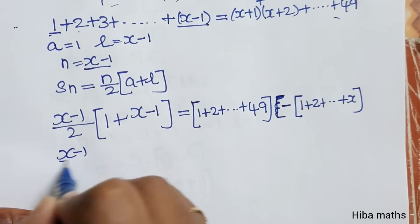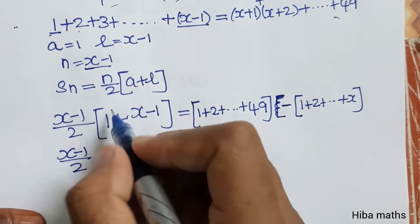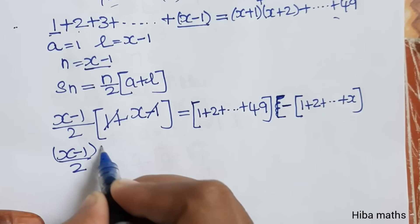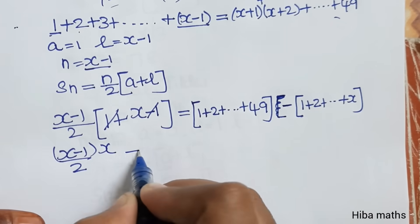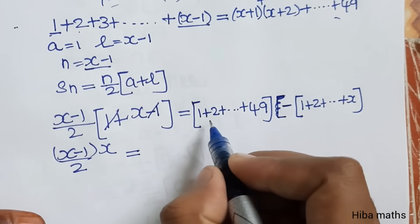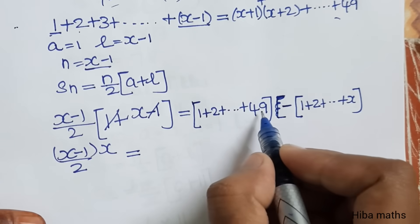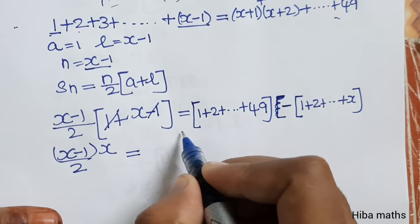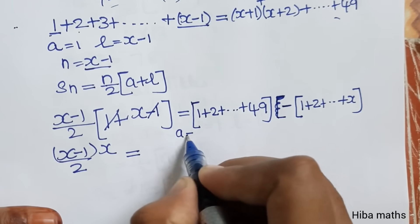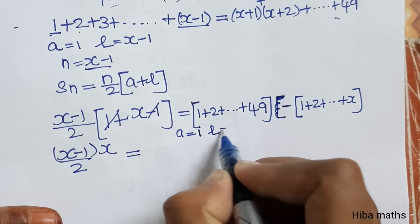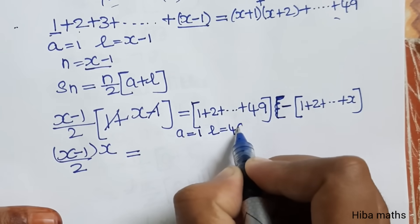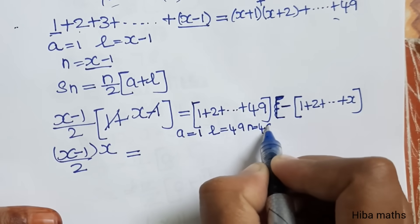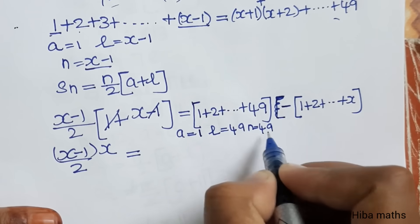So x minus 1 divided by 2, with plus 1 minus 1 cancelling. This equals the sum formula using A value 1, L value 49, and N value 49, giving us 1 plus 49. A value is 1, L value is 49, N value is 49 — the last term equals n.